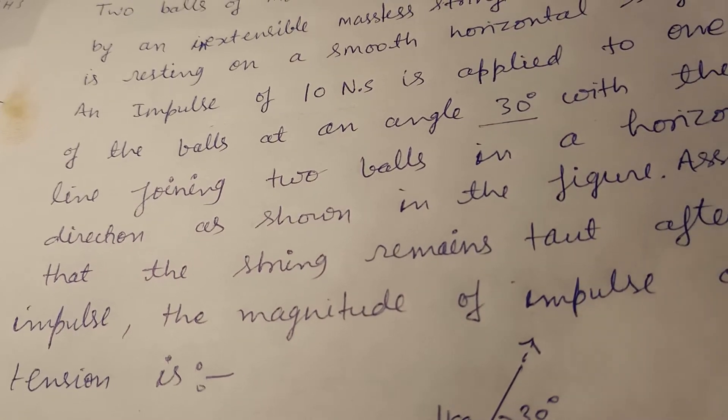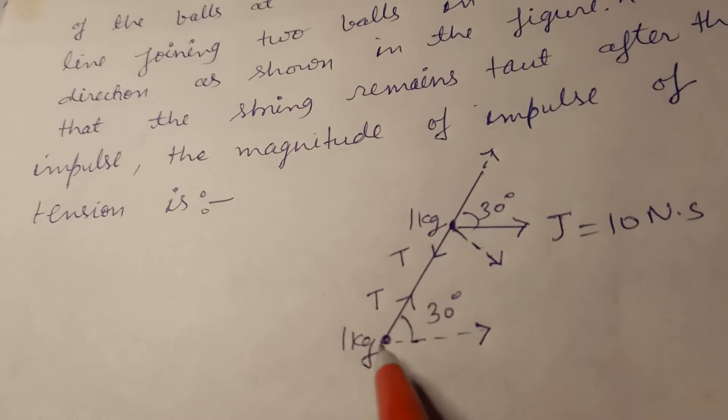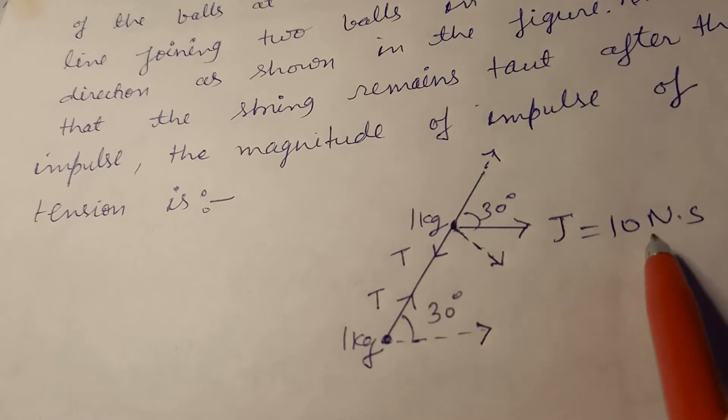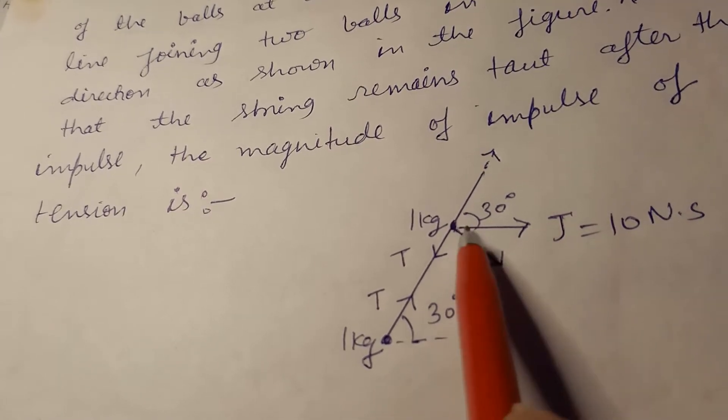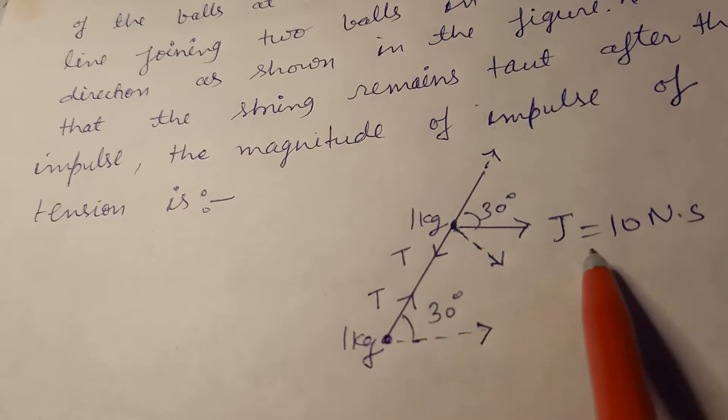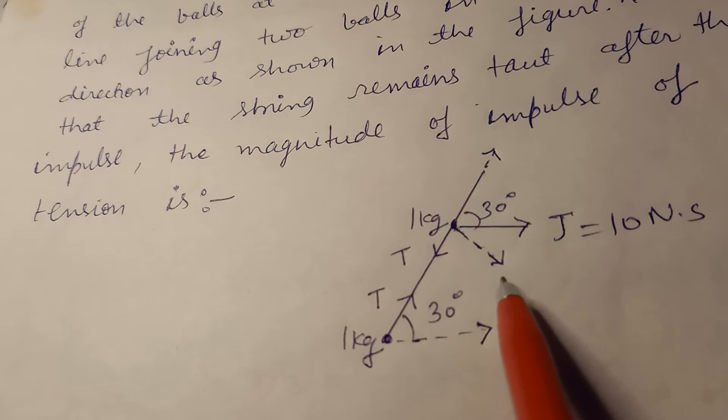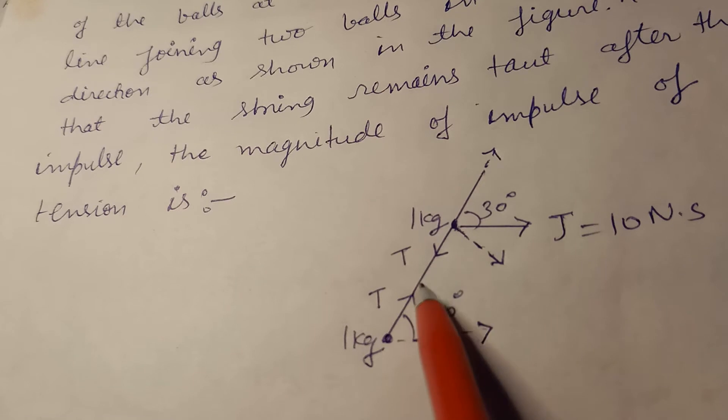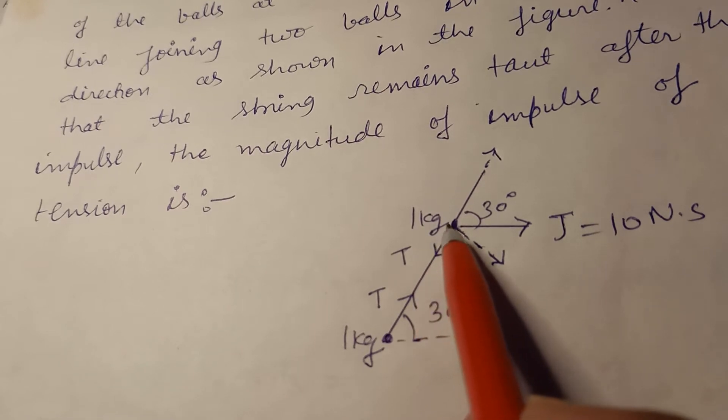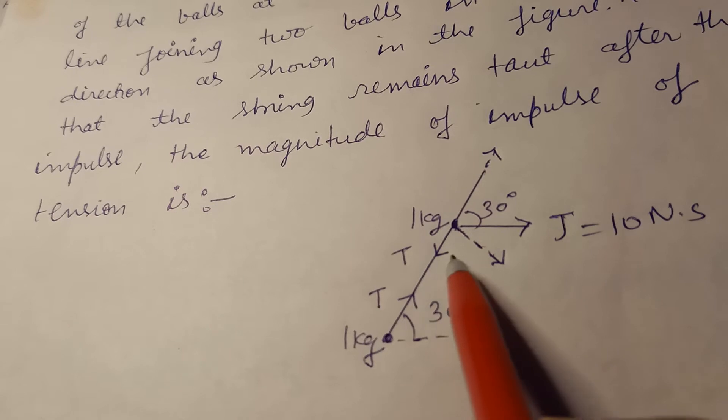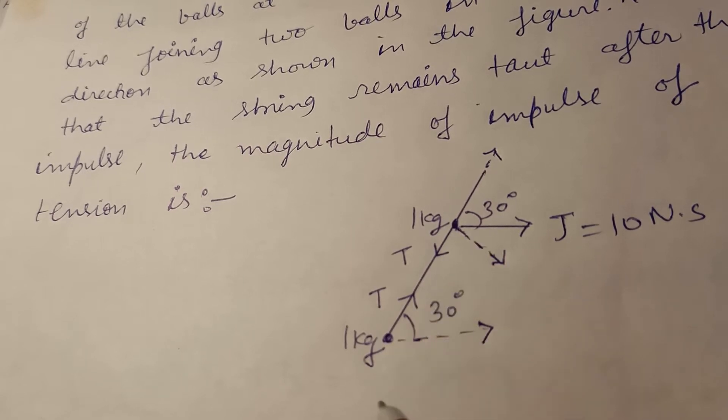This is your diagram - two balls, one here and one here. You are applying an impulse of 10 Newton-second at 30 degrees from the line joining the two balls. The string remains taut, which means there is some tension applied in the string and the distance between the balls remains the same.